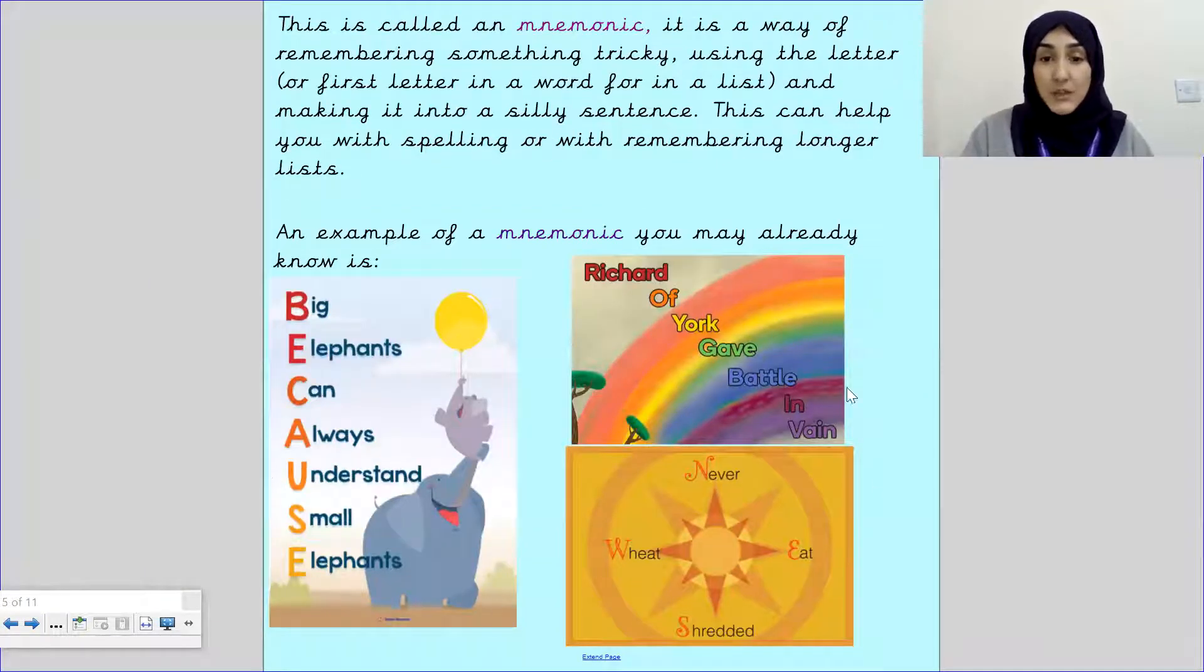This right here, all these pictures are called a mnemonic. It is a way of remembering something tricky, using the letter or the first letter in a word for a list and making it into a silly sentence. This can help you with spelling or remembering longer lists. For example, a mnemonic that you may already know is, this is how you spell because. Big elephants can always understand small elephants. So when you're saying the sentence, each word in the sentence, the first letter of each word, it spells it, look.